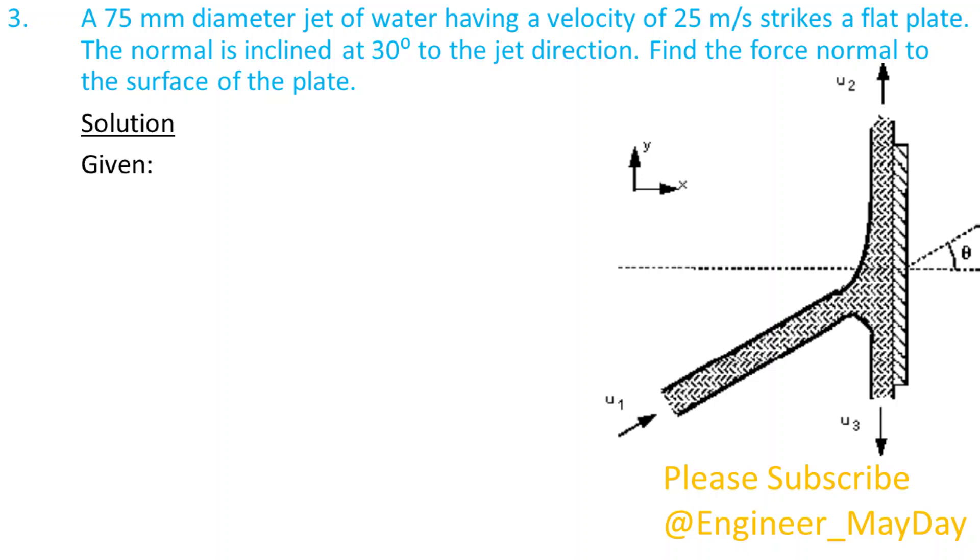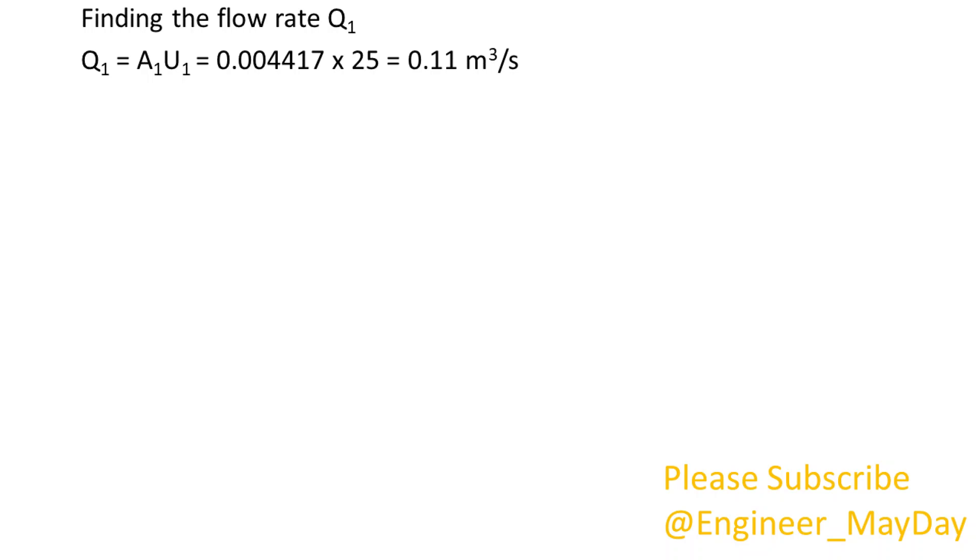Given: D equals 0.075 meters. U1 equals 25 meters per second. Theta equals 30 degrees. Finding area A1. A1 equals 0.004417 square meters. Finding the flow rate Q1. Q1 equals 0.11 cubic meters per second.